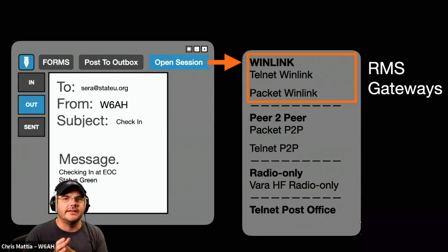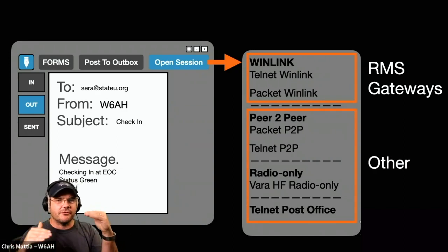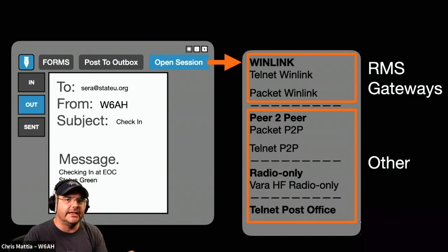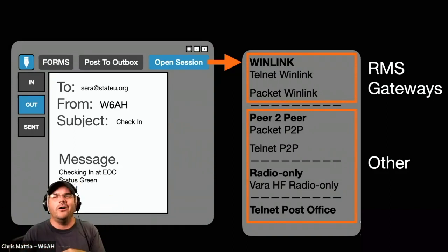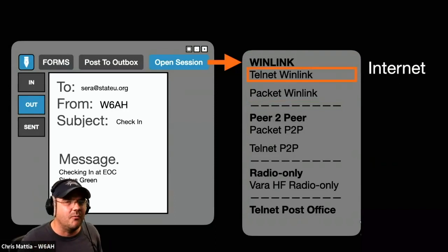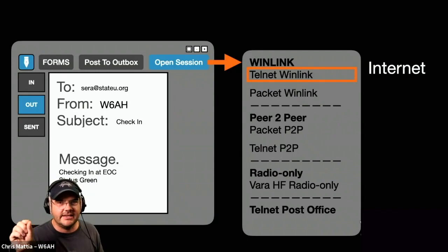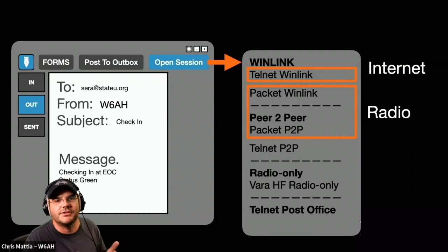The bottom section has three more tiers — other ways you can use Winlink to send messages, including peer-to-peer between two Winlink stations either via internet or RF, radio-only, and a Telnet post office. For now, we'll group all of that into the 'other' category and set it aside for later in the course. To figure out which to select: if a listing says Telnet, it's using the internet. If it does not say Telnet, it's using radio or RF. You just choose which way you want to send your message.